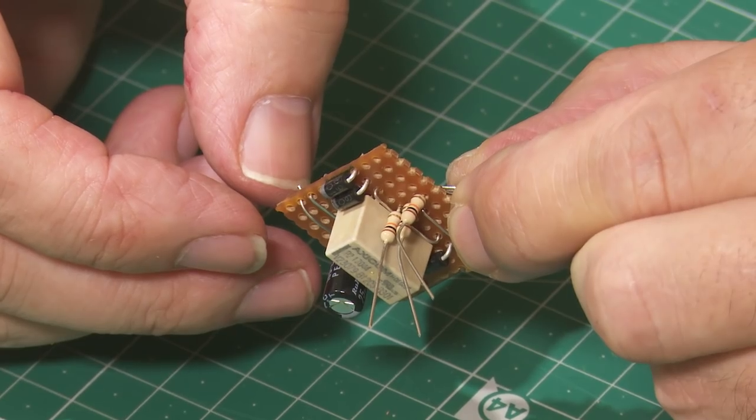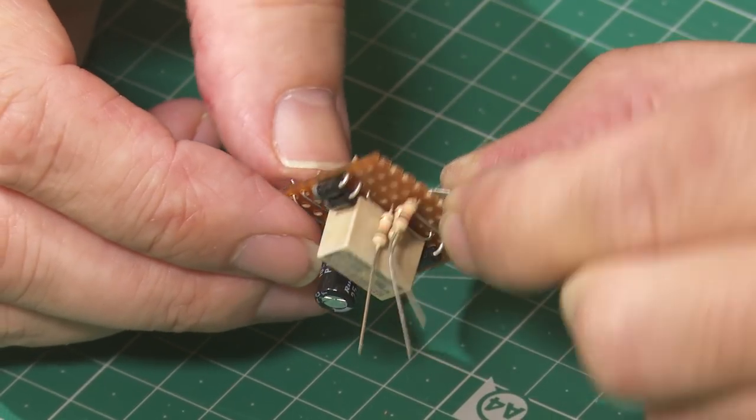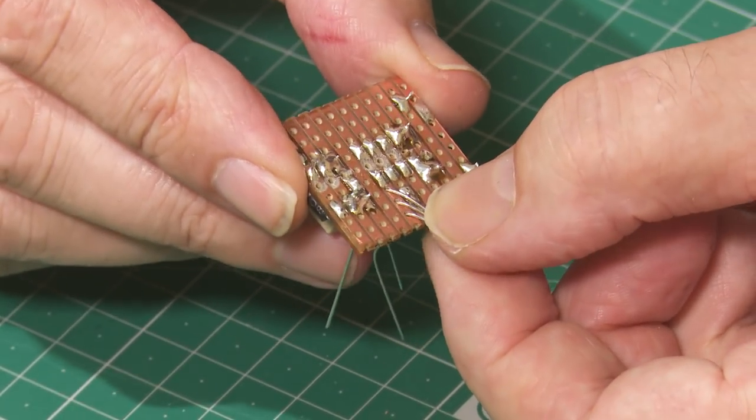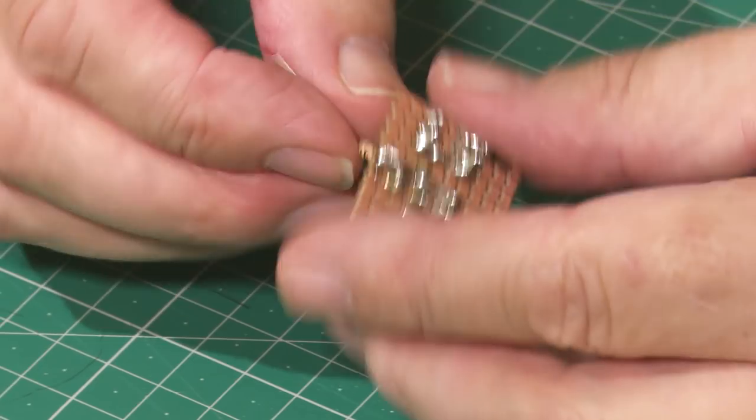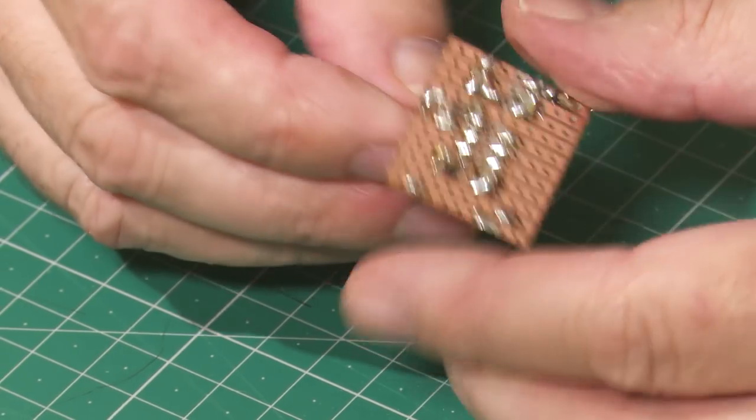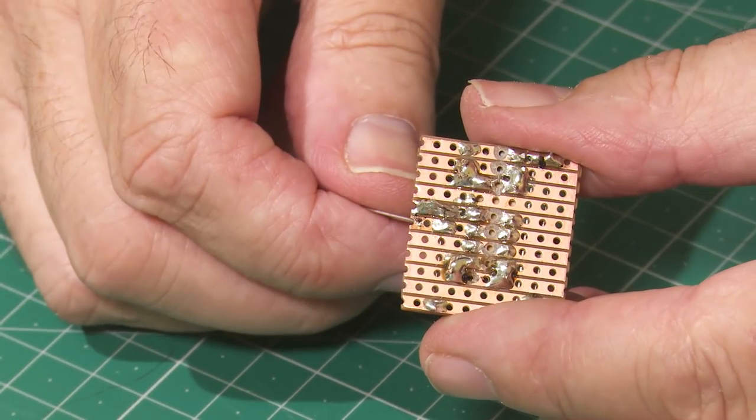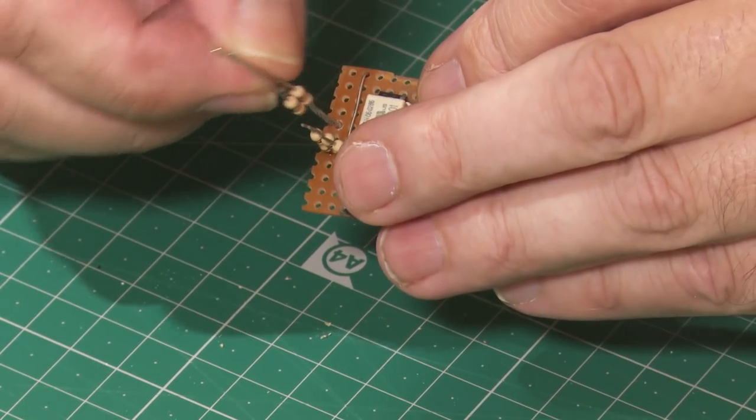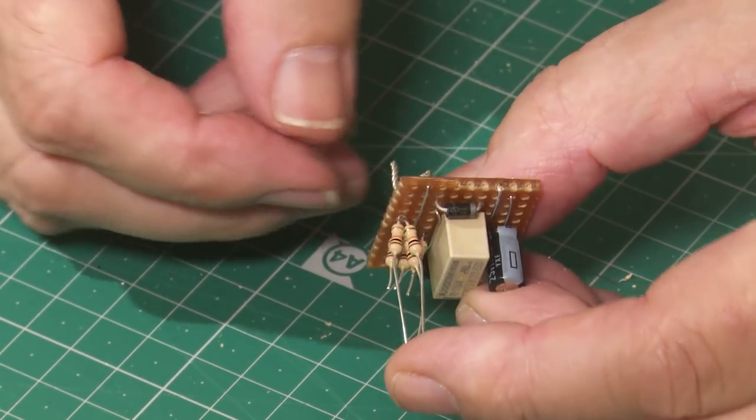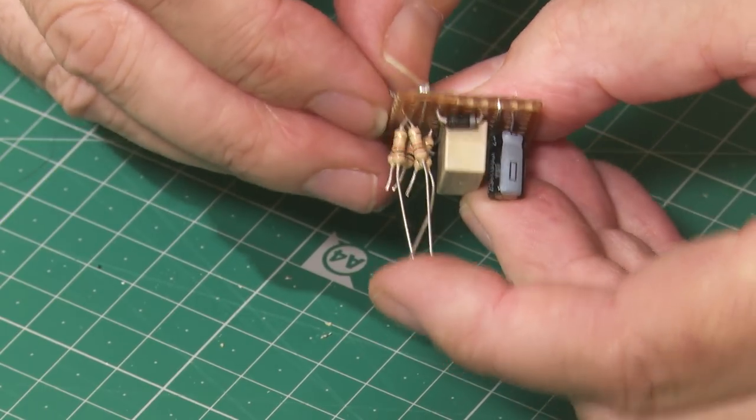Moving on to the resistors you can either insert the three resistors into the three different holes and solder them, or twist the legs together of the resistors and then solder them through the one hole.